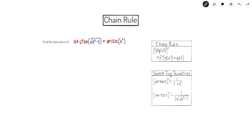The chain rule is used whenever we're taking the derivative of a function that's composed with another function. So here we have the function g being inside of the function f, and I want to take the derivative of that entire function. According to the chain rule, I can do that by taking the derivative of the outer function, plugging the inner function into it, and multiplying that times the derivative of the inner function.